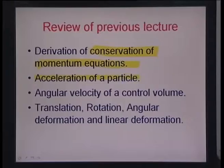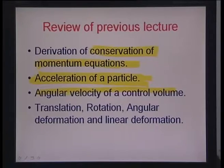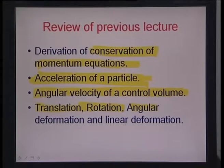We also talked about how the angular velocity of a particle can be related to the average velocity of both sides of a control volume. We investigated the rotation case and the angular deformation case, and found that they can be represented as the variation of the y-velocity in the x-direction and the x-velocity in the y-direction respectively. We discussed different types of deformations a cubic control volume would have, including translation, rotation, angular deformation, and linear deformation, as the control volume moves along the fluid path.